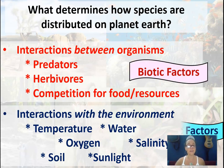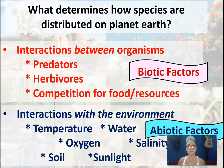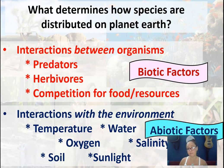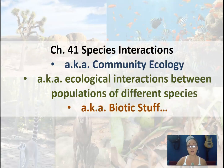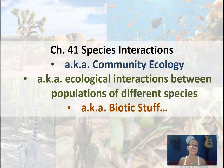Basically, we have biotic factors and abiotic factors. Community ecology focuses on the biotic factors within an ecosystem — how different populations of living organisms interact together. When we get to ecosystem ecology, we also bring in abiotic factors and discuss everything as a whole, tying in both biotic and abiotic. Here, we're looking at species interactions in community ecology, which covers how different populations are influenced by each other.